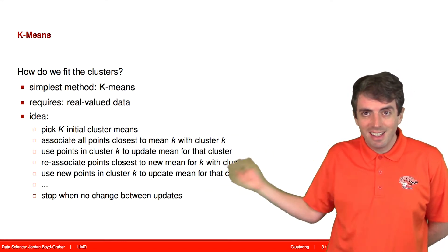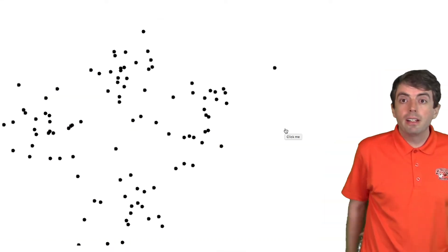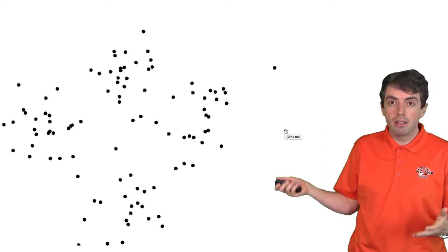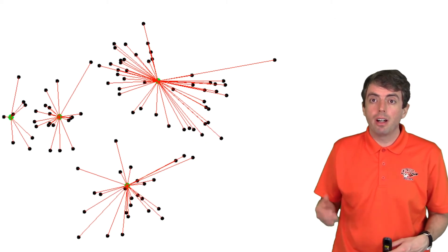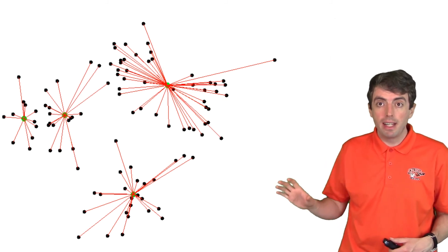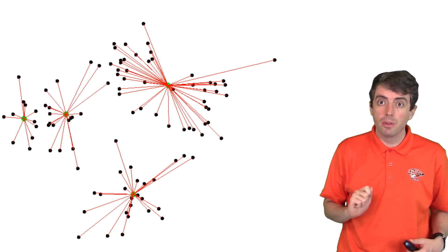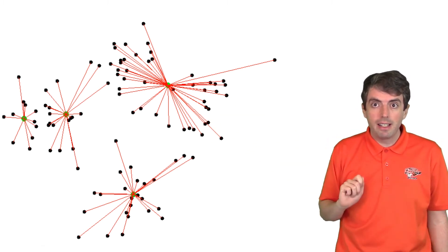That's the explanation in words, but it's much easier to see as an example. Here's an example of data points in two dimensions — all examples will be in 2D since it's easier to show pictures, though you can do this in as many dimensions as you want. We'll start with four centers being the four leftmost points, and each data point gets assigned to one of those four centers.